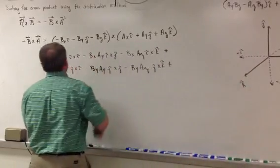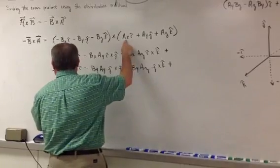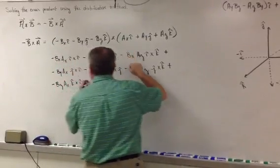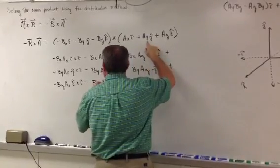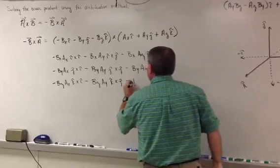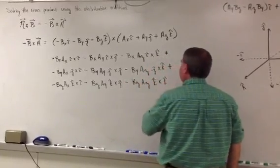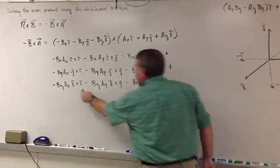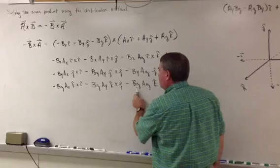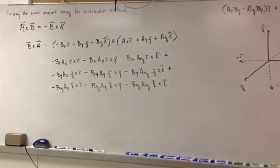Next line: negative bz·ax (k cross i), minus bz·ay (k cross j), minus bz·az (k cross k). Double-checking: k cross i, k cross j, k cross k — negative bz, negative bz, negative bz — ax, ay, az. Everything is cyclical, so everything is good so far.